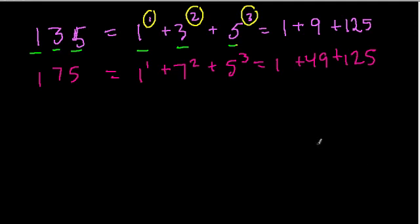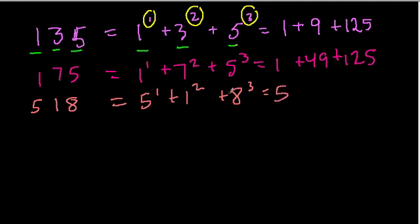And we can keep going. If we were to try the number 518, that is equal to 5 to the 1st plus 1 to the 2nd plus 8 to the 3rd. 5 to the 1st is 5. 1 to the 2nd is still 1. So we have 6 so far. And what is 8 to the 3rd power?